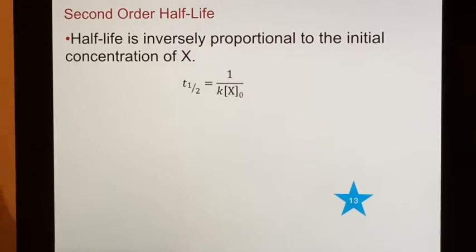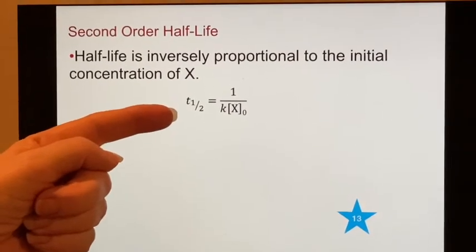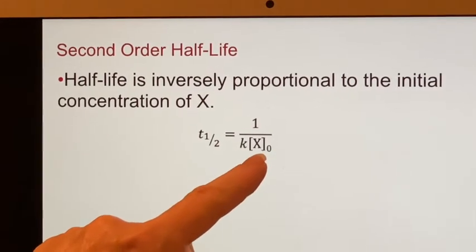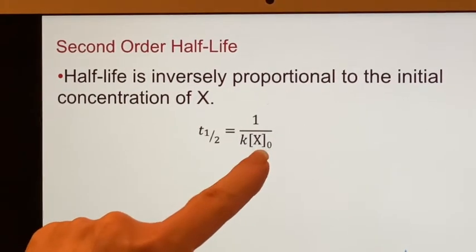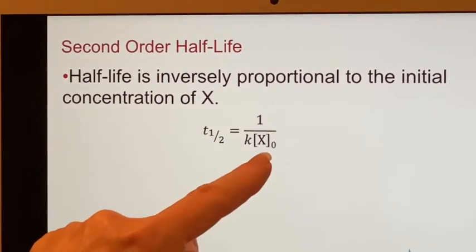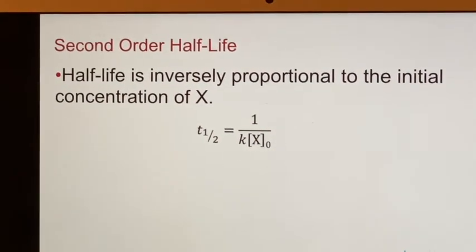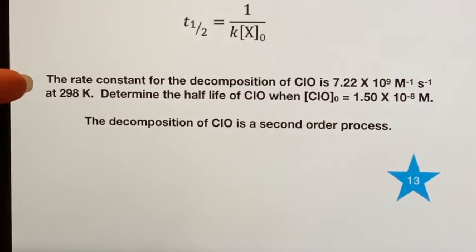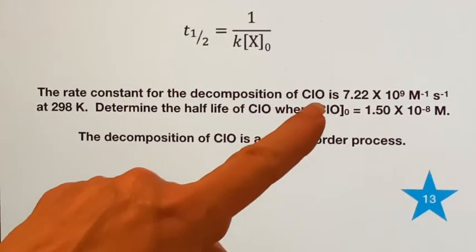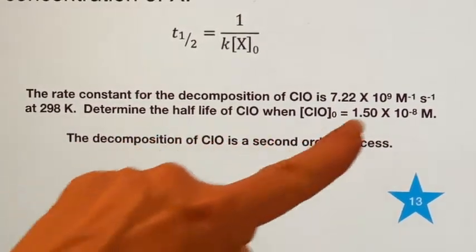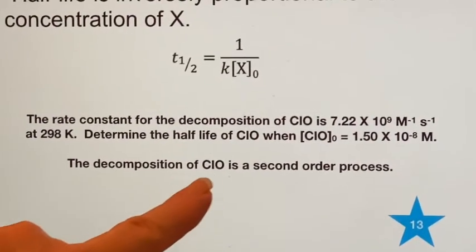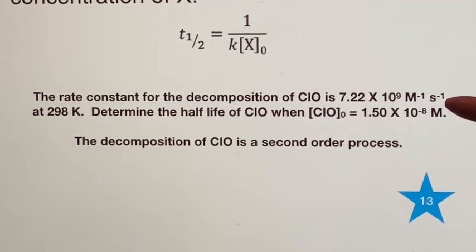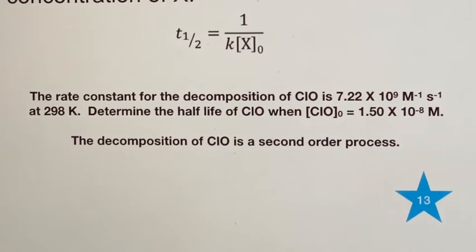The second order integrated rate law gives rise to a second order half-life. Our previous half-life had no reference to the substance itself — it just had a number and K. Now the substance does matter. The half-life is going to depend on how much of the stuff you started with. It's not an exponential decay anymore; it's a different type of decay. The rate constant for the decomposition of chlorine monoxide is given, and they tell you the decomposition is a second order process. You could actually figure that out from the units of the rate constant, but it's nice of them to point it out.